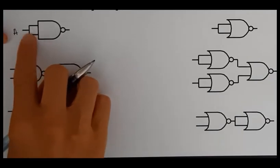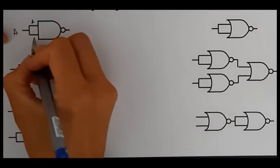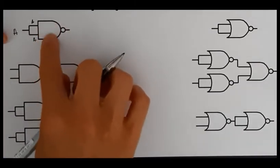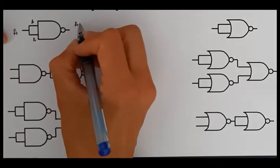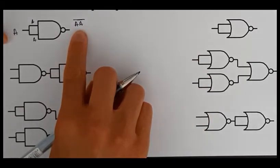So here you've got two inputs but they're actually the same as each other. So here I've got A and A and this is a NAND gate. So I AND the two together and then I NOT them.